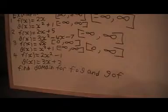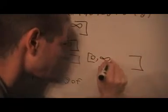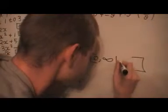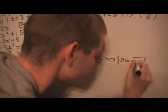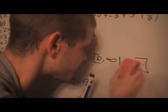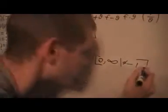So I want all the values from 0 to infinity, but G of X must not equal minus 1, so X cannot be minus 1.